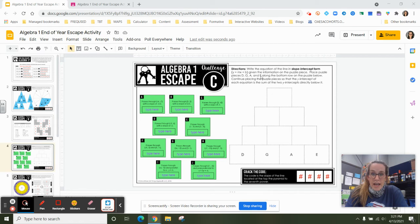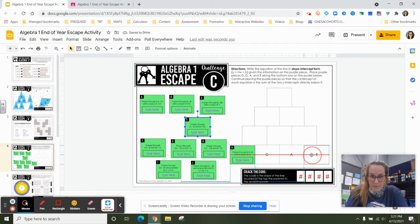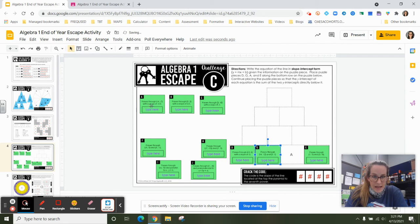Place pieces D, G, A, and E along the bottom row. So let's see here. It tells us to put D, let's see here, E comes over here, G, and A.